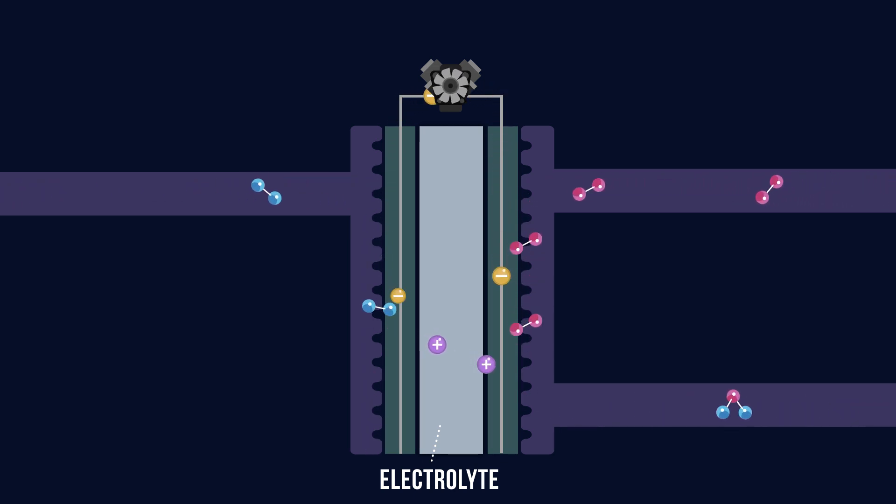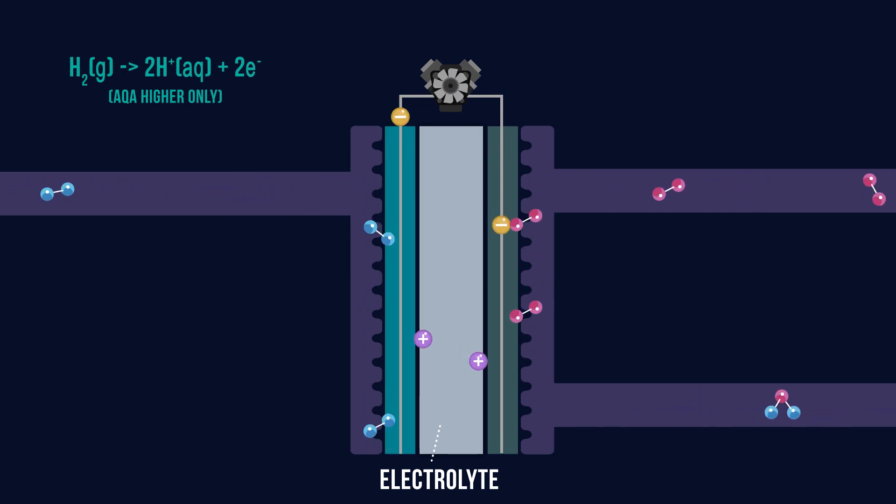It does allow positively charged hydrogen ions, known as protons, to pass through though. These protons are produced by passing the hydrogen molecules over a platinum metal catalyst which splits them into the protons and electrons. This splitting process is called oxidation.